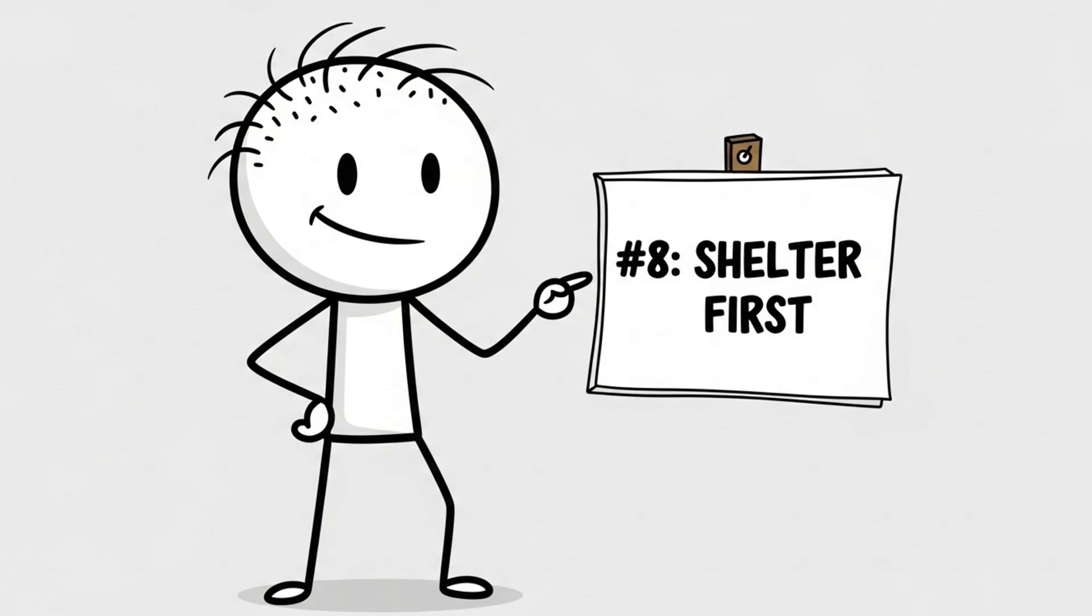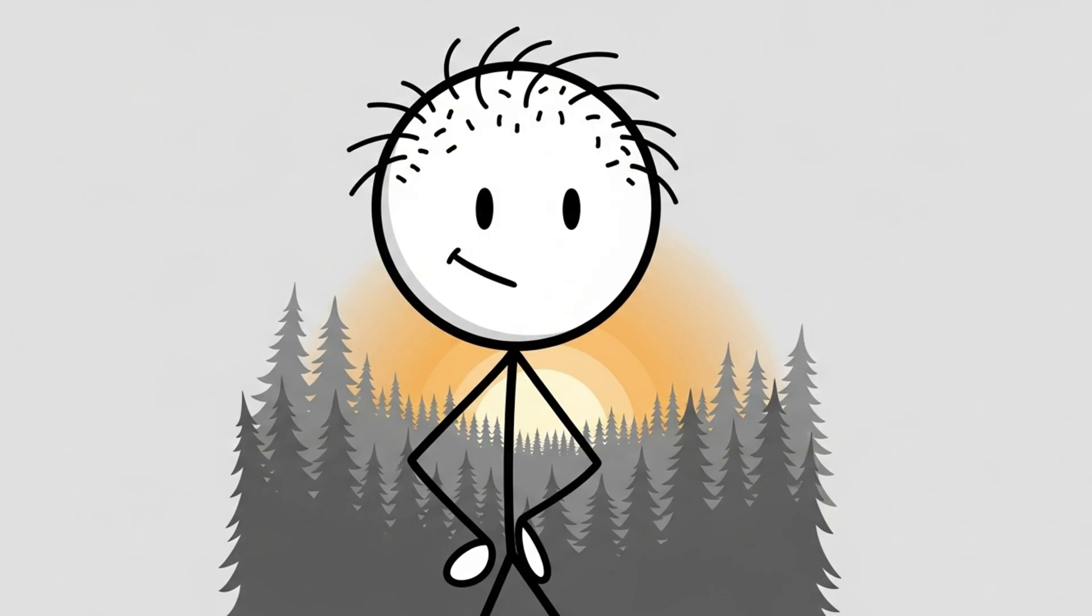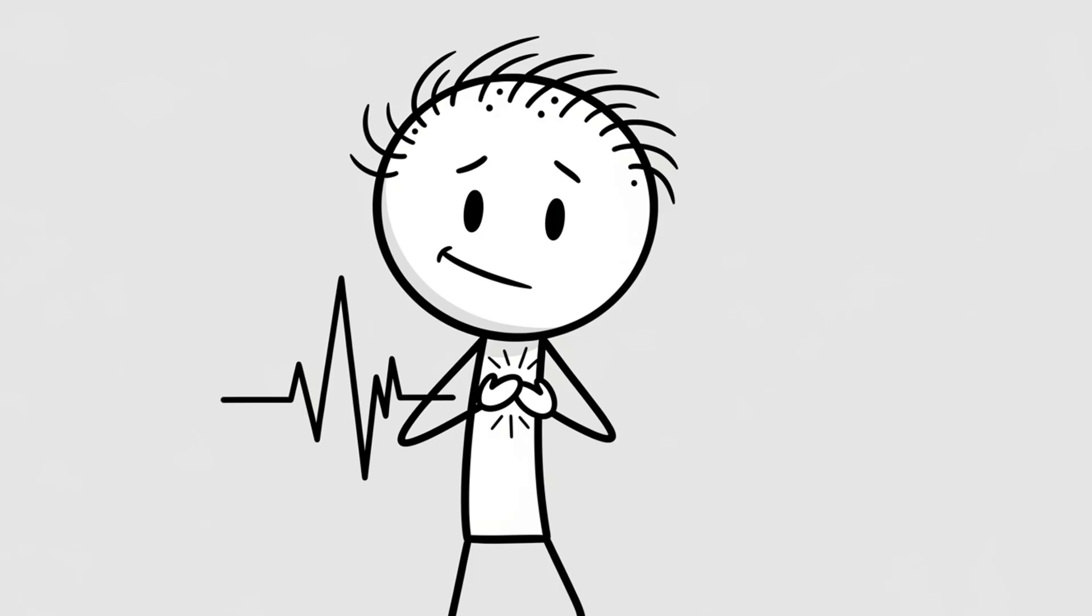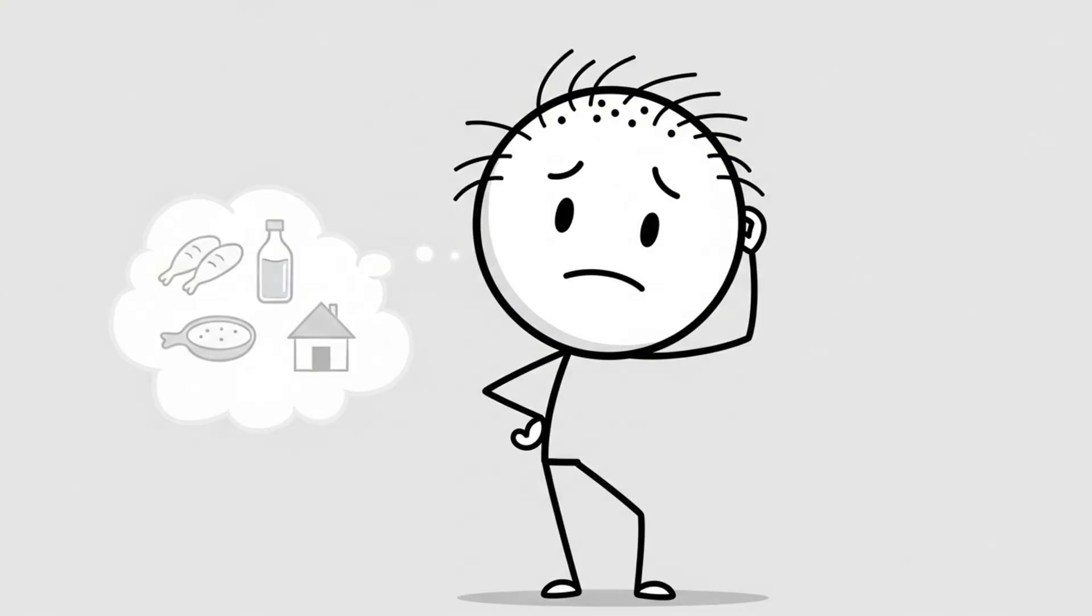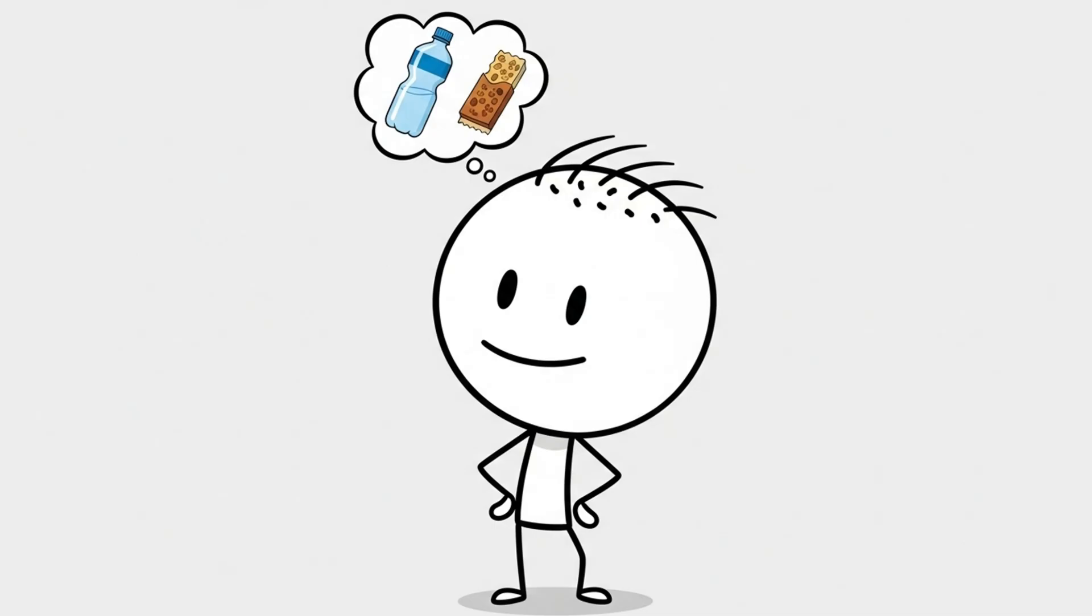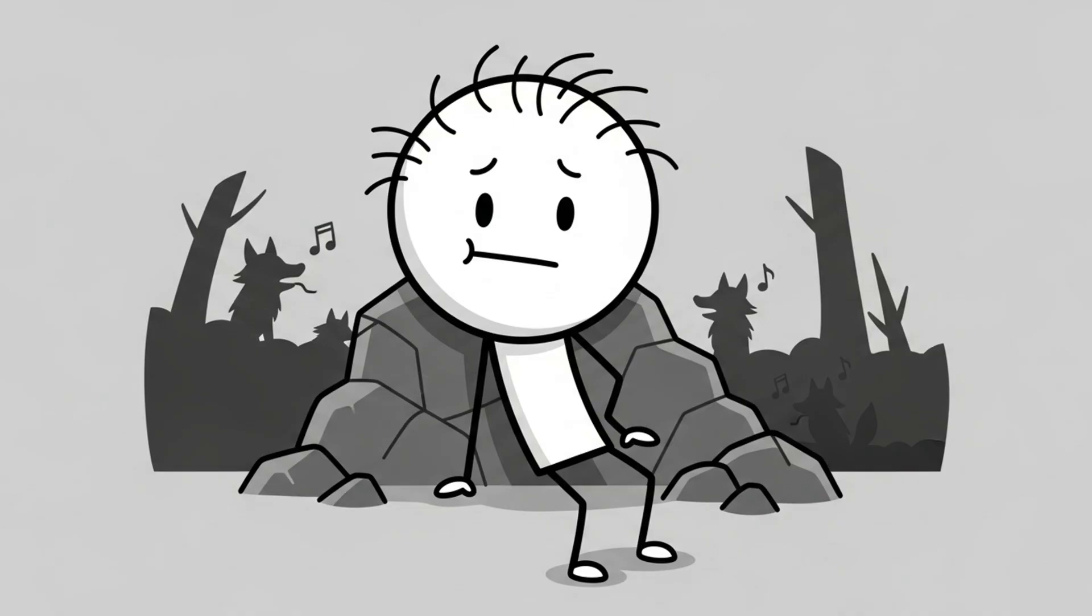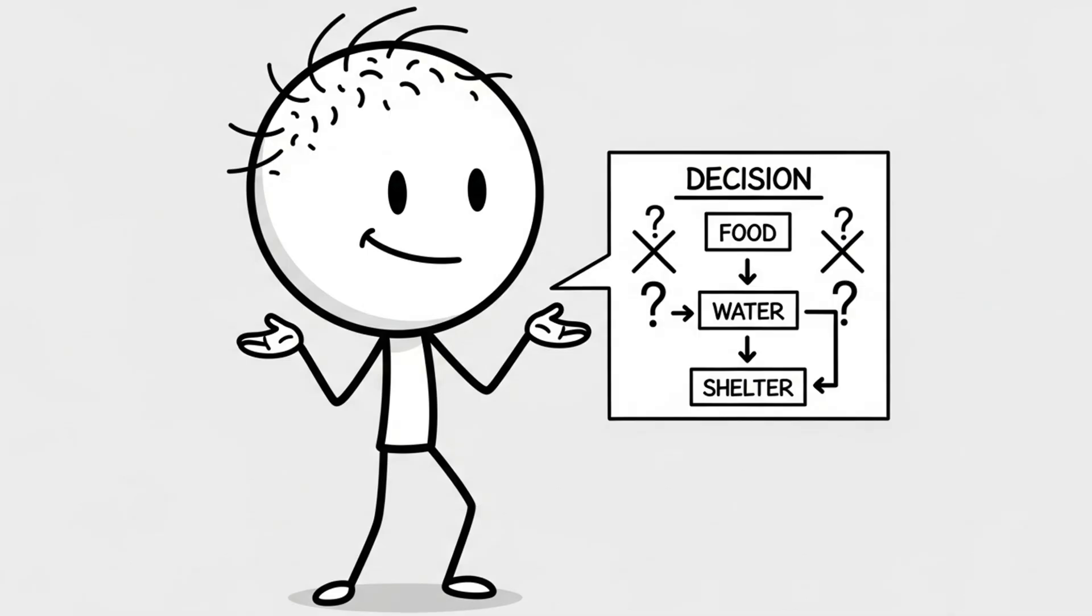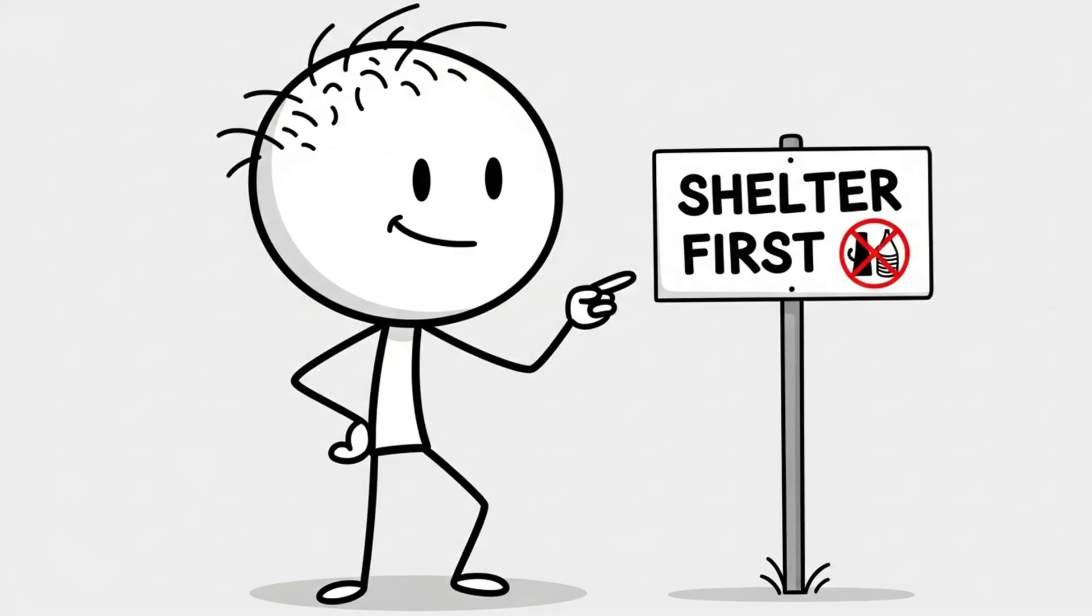Number 8. Shelter first, then water, and food. You're stranded. Adrenaline kicks in. You remember something vague about survival priorities. You know you need water and food, but you also don't want to sleep on rocks with coyotes whispering sweet nothings all night. So what's the real priority? Spoiler alert. It's shelter, not food, not even water.